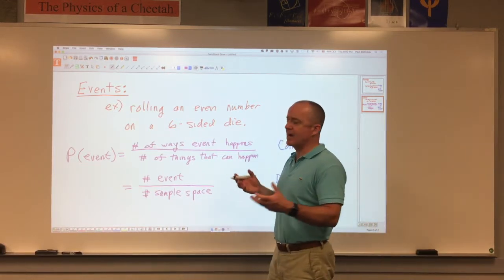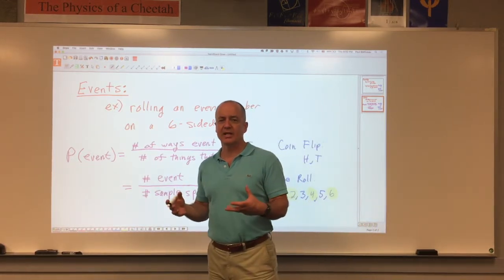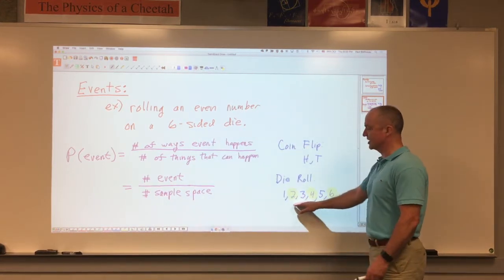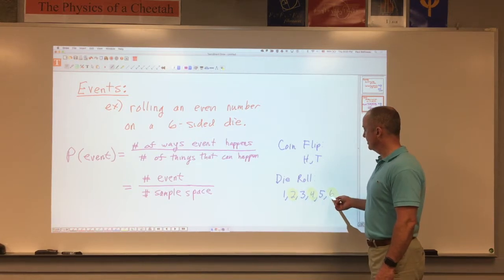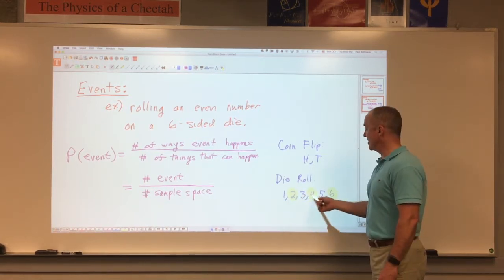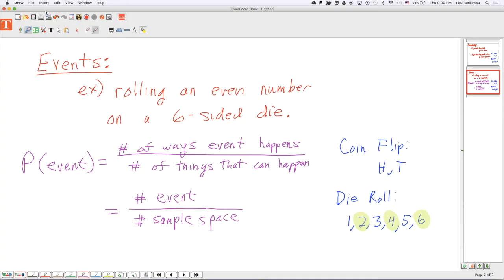So, for example, if I say, I want to know the probability of the likelihood that I will roll an even number on a six-sided die. Well, I've got three things in my event, and six things in my sample space. So, let's take a look at that.